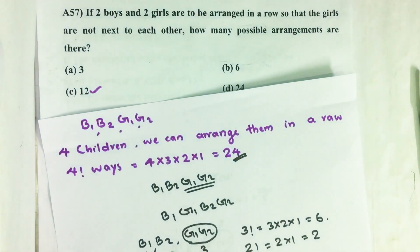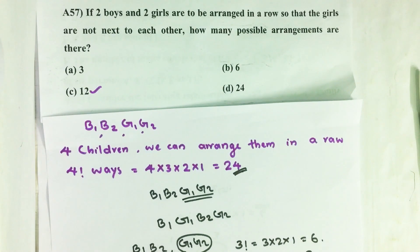We get 24 minus 12 equals 12. Our answer is option C, 12. If you have any suggestions, please do comment. Don't forget to like, share, and subscribe to our channel. Keep supporting and loving us. Jai Hind.